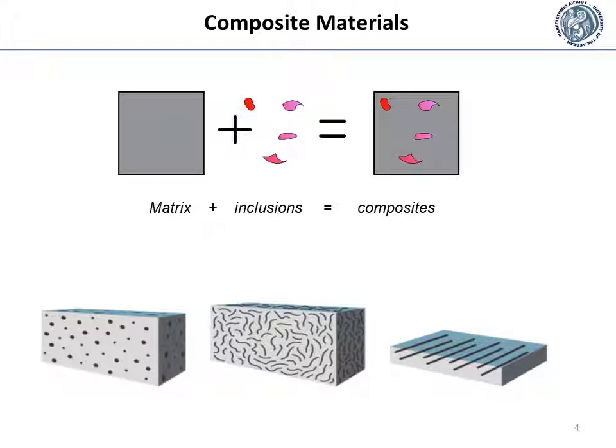A composite material, also called a composition material or shortened to composite, which is the common name, is a material made from two or more constituent materials with significantly different mechanical or chemical properties that, when combined, produce a material with characteristics different from the individual components.